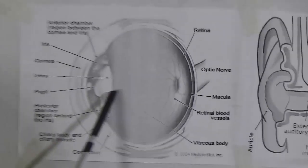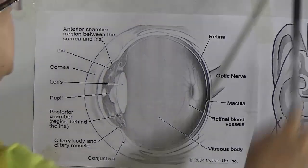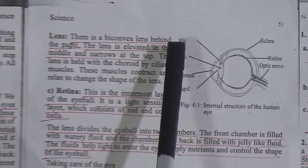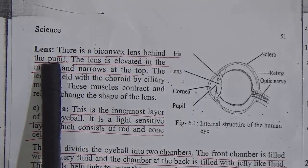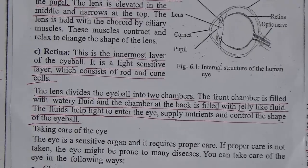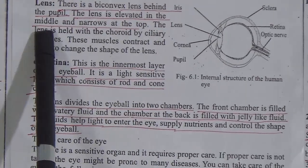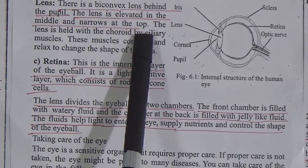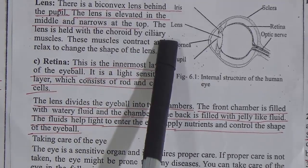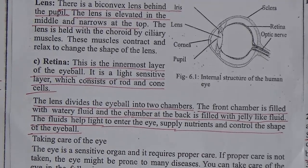With the help of the pupil, light can get inside the retina. Lens: there is a bi-convex lens behind the iris and pupil. The lens is elevated in the middle and narrow at the top. The lens is held with the cornea by ciliary muscles, which contract and relax to change the shape of the lens. An artificial lens worn in front of the eye is called a contact lens.